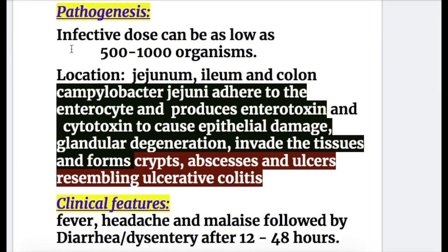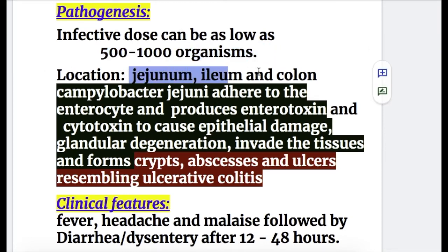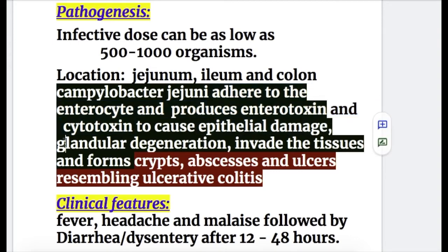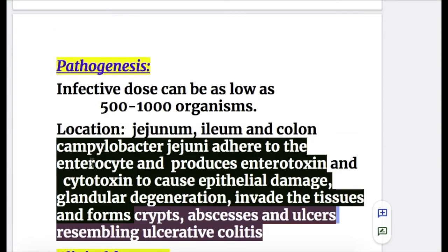The pathogenesis of Campylobacter jejuni: the infective dose is small — 500 to 1,000 organisms may cause infection. The site of infection is the jejunum, ileum, and colon. Campylobacter jejuni adheres to the enterocytes and produces enterotoxin and cytotoxin, causing epithelial damage, glandular degeneration, then invades the tissues and forms crypts, abscesses, and ulcers resembling ulcerative colitis and Crohn's disease — making the disease indistinguishable from these disorders.